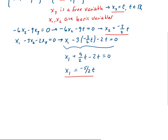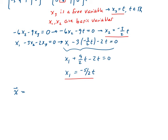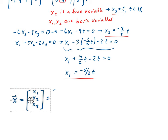So let's go ahead and write out our solution. The solution vector x — which is (x1, x2, x3) — is: x1 equals minus 5 halves t, x2 equals minus 3 halves t, and x3 equals t. This is the null space of A.